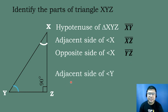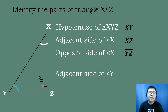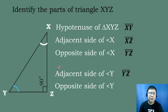Next, let's identify the adjacent side of angle Y. If angle Y is our given angle, the side in between angle Y and the right angle is the adjacent side, so the adjacent side is segment YZ. For the opposite side of angle Y, we look across from it, and the opposite side is segment XZ.